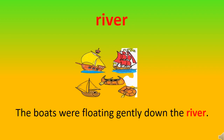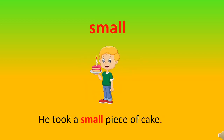The word is 'river.' River means a natural stream of water — a natural stream of water which is fairly large. We will use this word in a sentence: The boats were floating gently down the river. The next word is 'small.' The meaning of small is an object which is of limited size, not so big. Let's use it in a sentence: He took a small piece of cake.